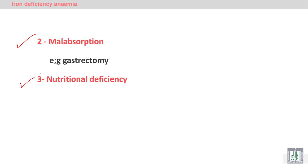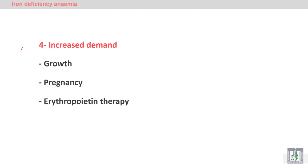Nutritional deficiency involves improper intake of iron in food, such as in vegetarian people or those who do not eat meat or liver for long periods. Increased demand occurs in certain groups: children, pregnant and lactating women, and patients taking erythropoietin therapy due to renal failure. In renal failure, erythropoietin is deficient, so exogenous erythropoietin stimulates the bone marrow to increase red blood cell production, increasing the demand for iron.